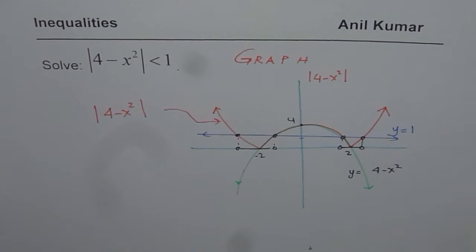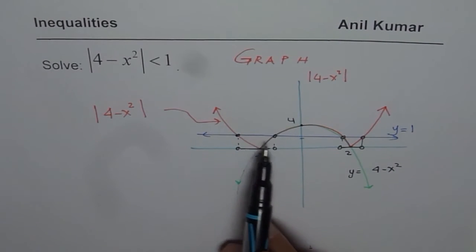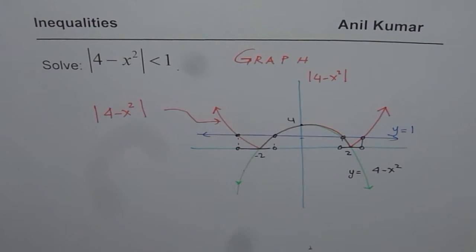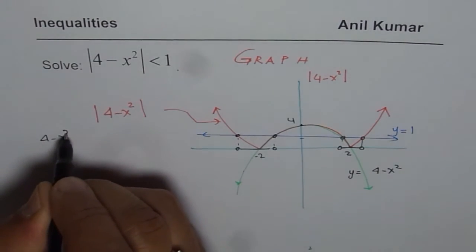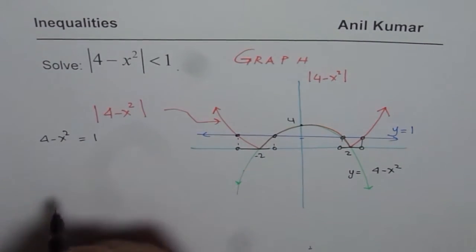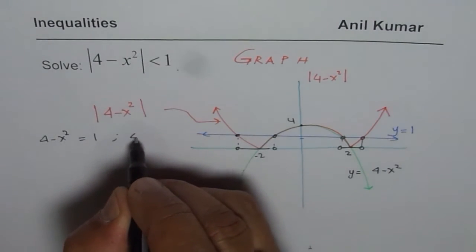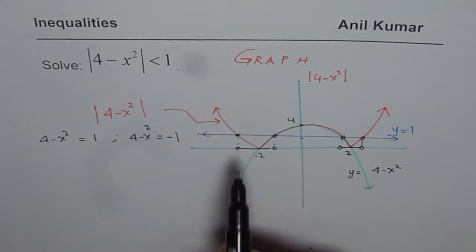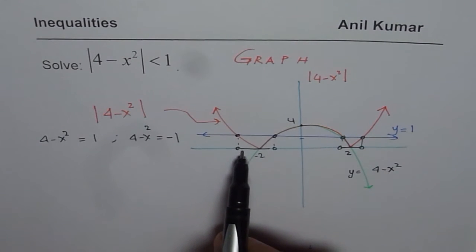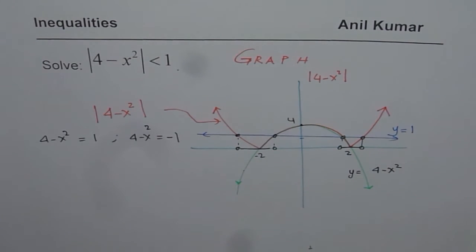Now to get these two points what we can do is we can solve for 4 minus x squared, because it is absolute value, equals to 1. And we can also solve for 4 minus x squared equals to minus 1. So we get these two points and the interval between them will be part of our solution. Is that okay? Let's solve.